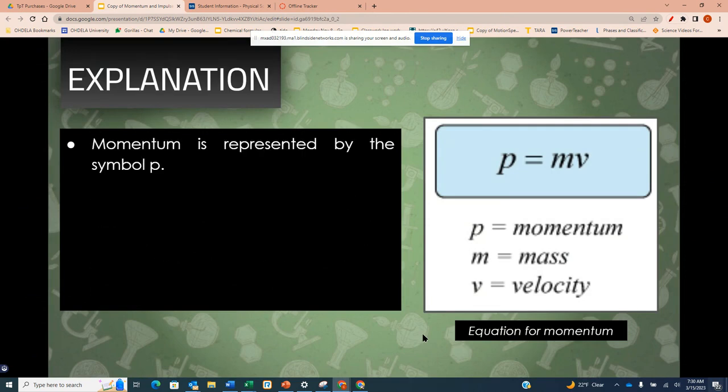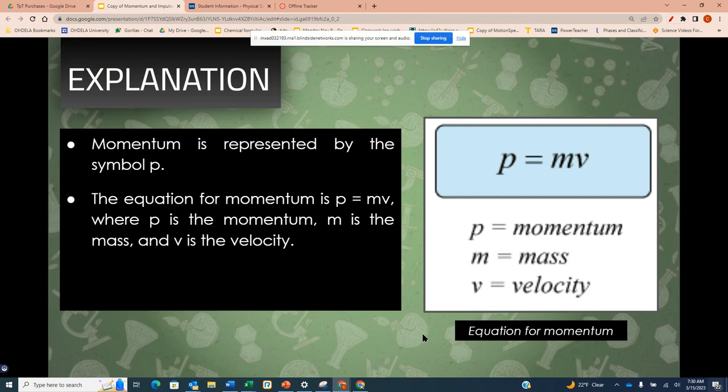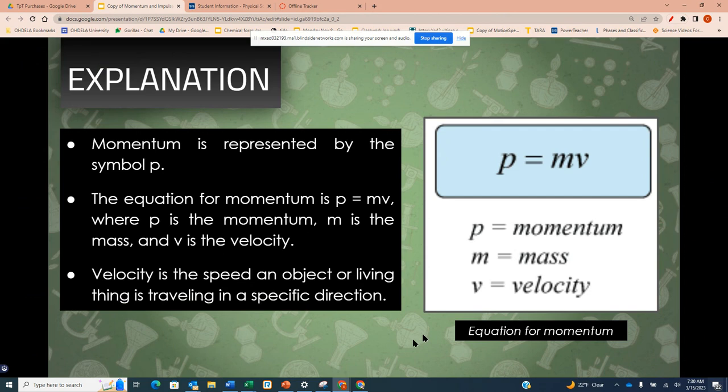Momentum is represented by the symbol p. The equation for momentum is p equals mv, where p is the momentum, m is the mass, and v is the velocity. Velocity is the speed an object or living thing is traveling in a specific direction.